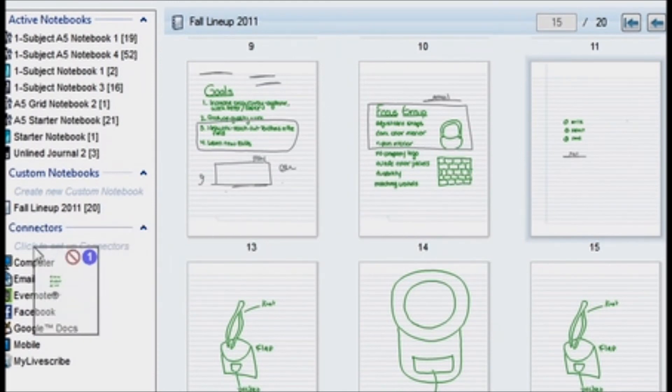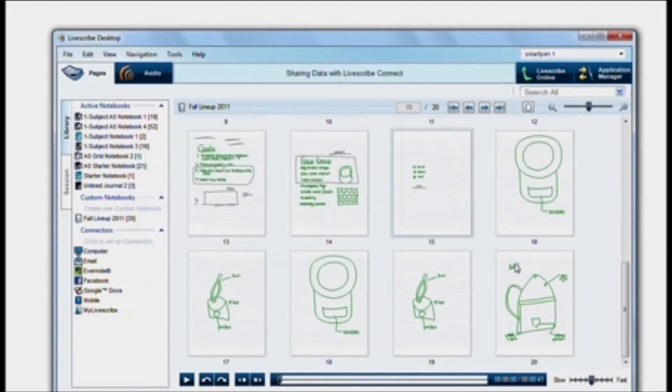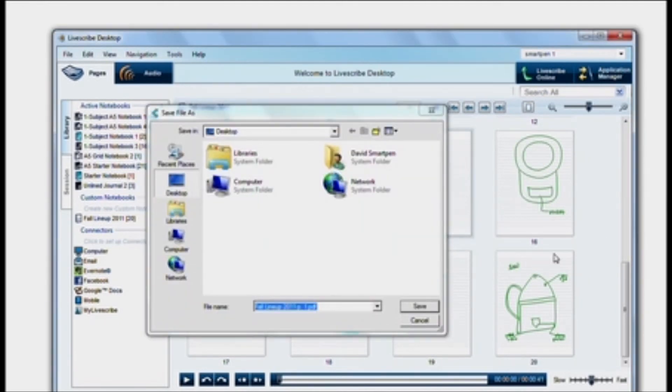You can also send pen casts with Livescribe Connect using Livescribe Desktop. Simply select your pages, then drag and drop them to the computer connector, and your pen cast PDF will appear on your desktop.